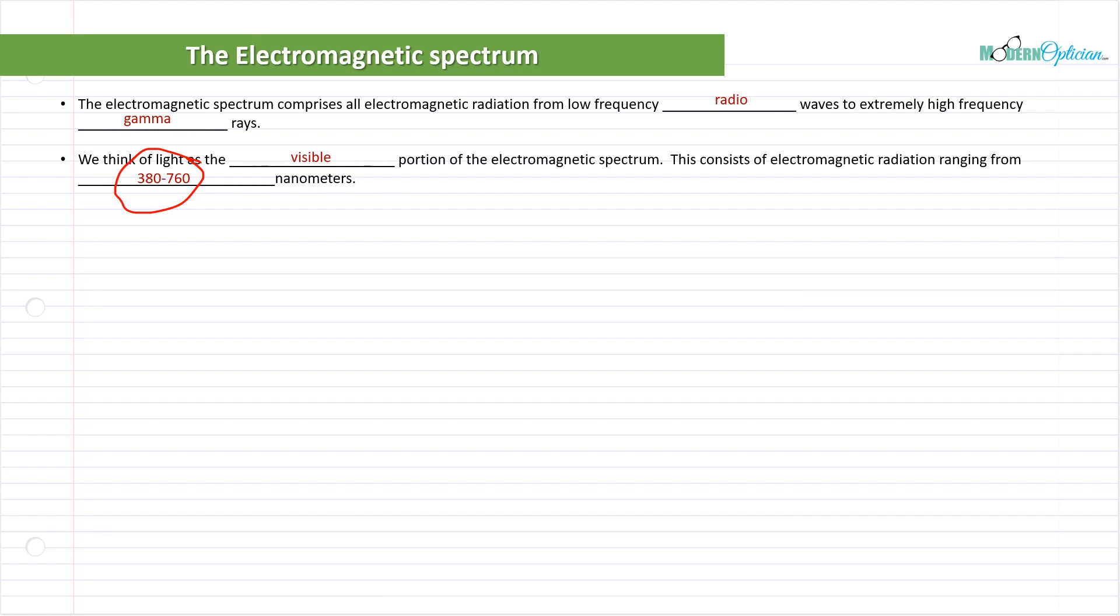And this is what comprises the stuff we see, the light that we're able to discern with our eyes. The wavelengths of that radiation fall within that range.